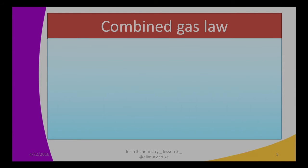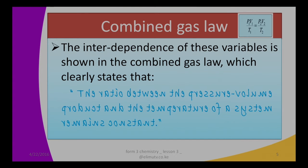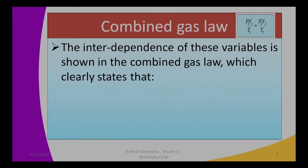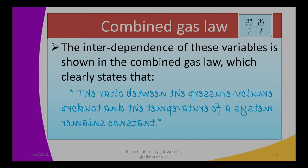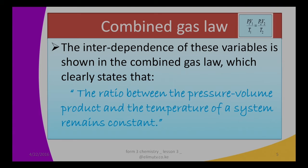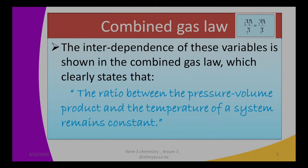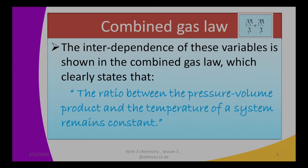When we relate these variables mathematically, these laws lead us to this explanation. The interdependence of these variables is shown in the Combined Gas Law, which states that the ratio between the pressure-volume product and the temperature of a system remains constant. So when you take the product of pressure and volume and divide by temperature in an enclosed system, that ratio is a constant.